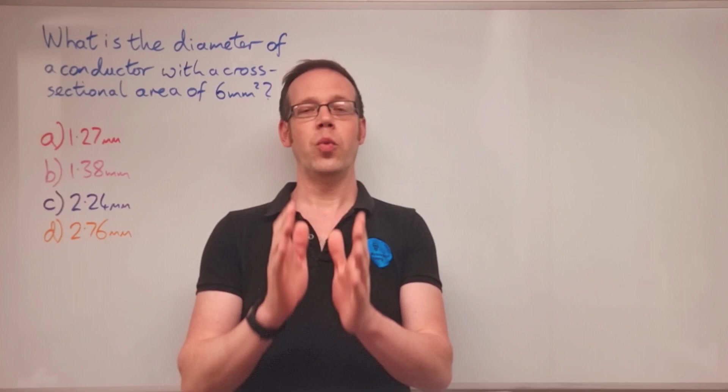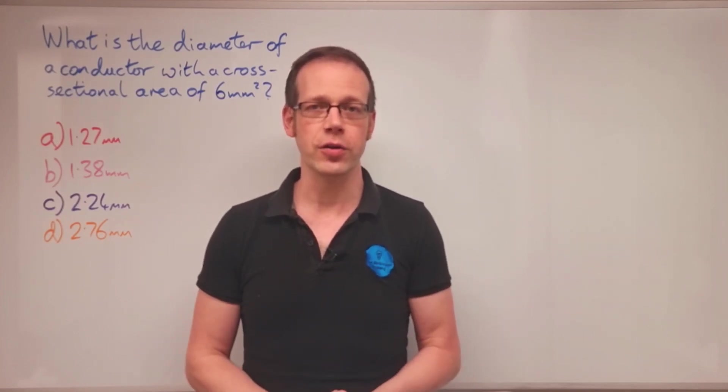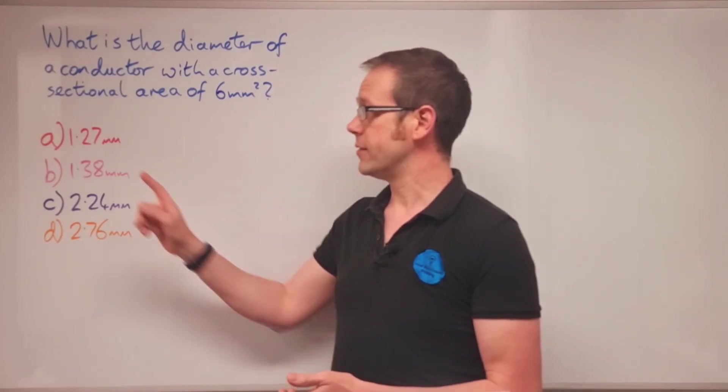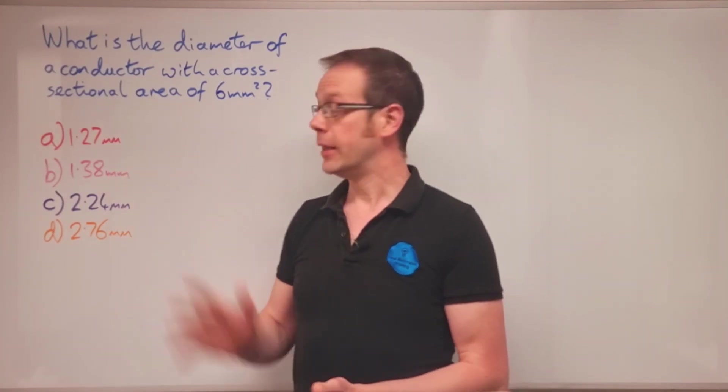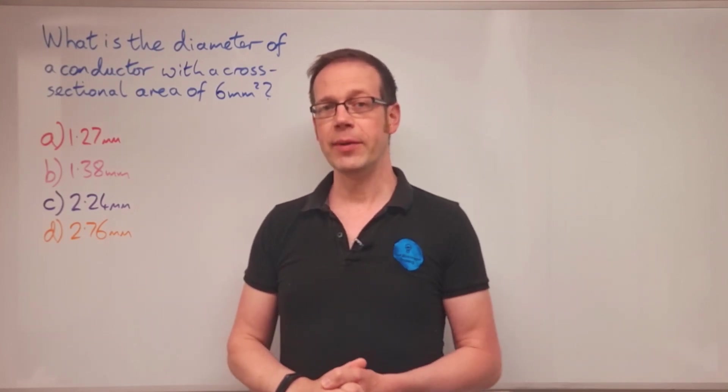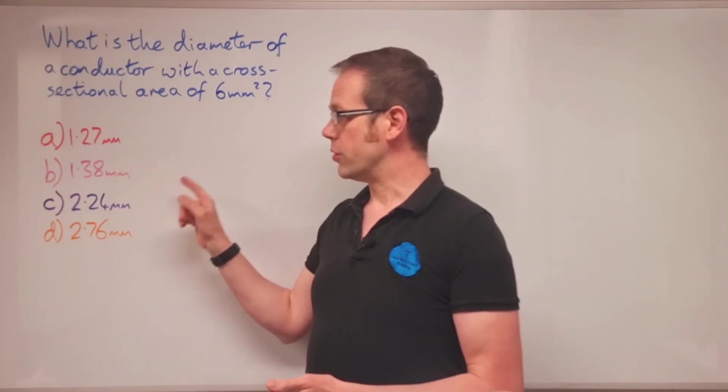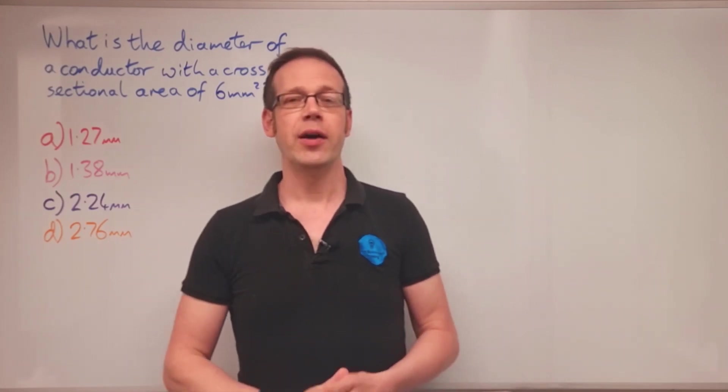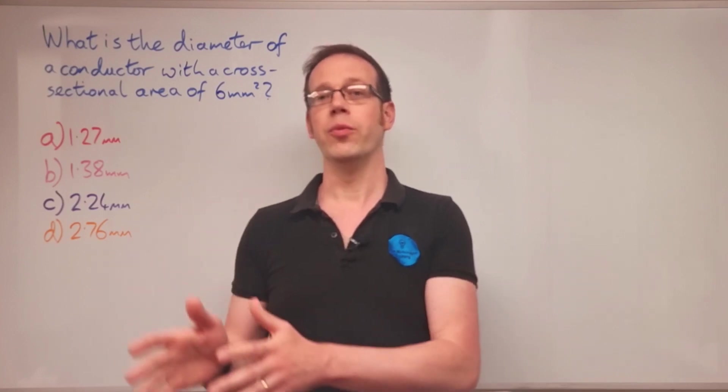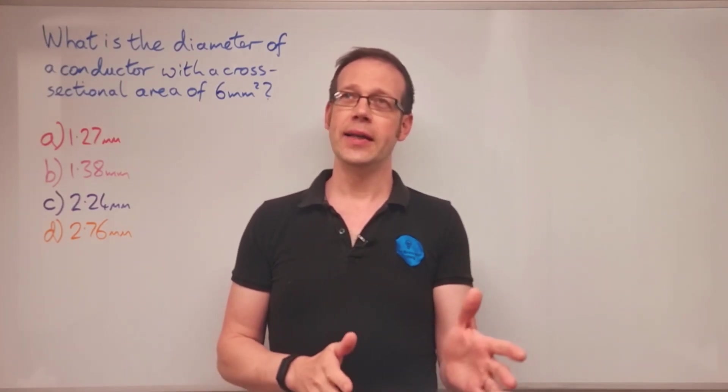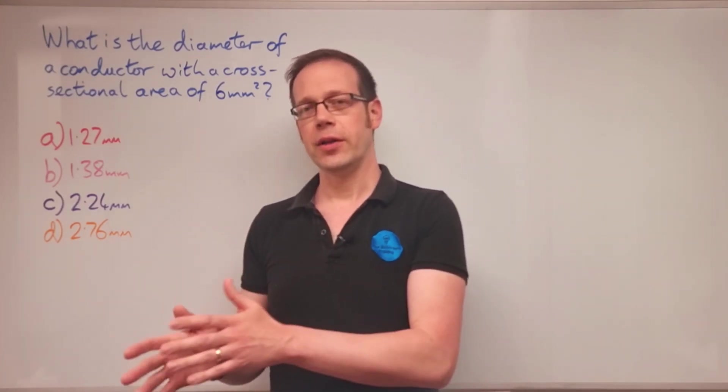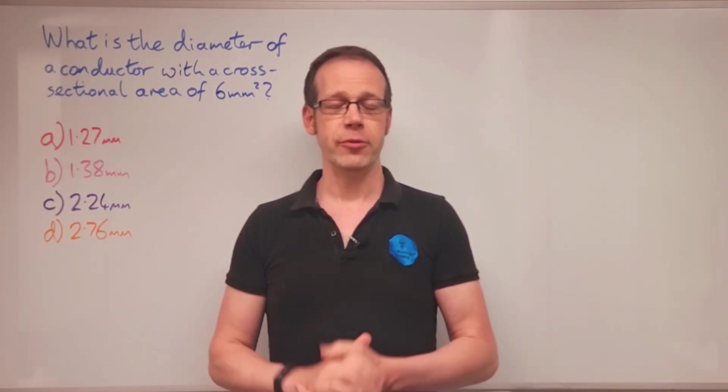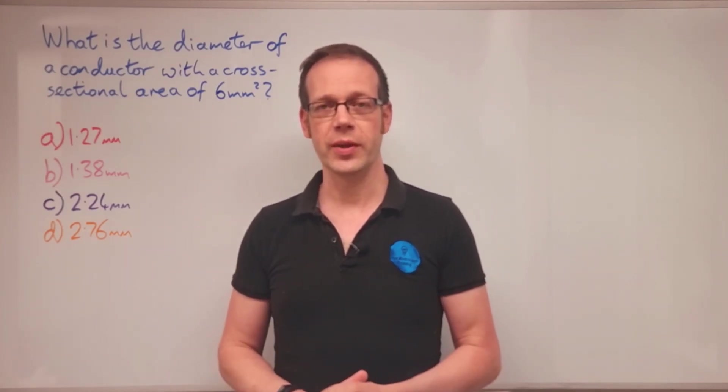The question is: what is the diameter of a conductor with a cross-sectional area of 6 millimeters squared? The answers are: a) 1.27mm, b) 1.38mm, c) 2.24mm, or d) 2.76mm. I'm going to show you how to answer this question in two different ways, a slightly harder way and a slightly easier way.